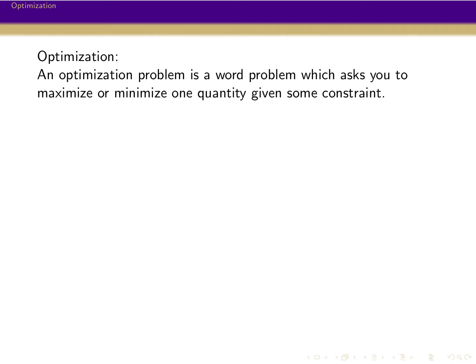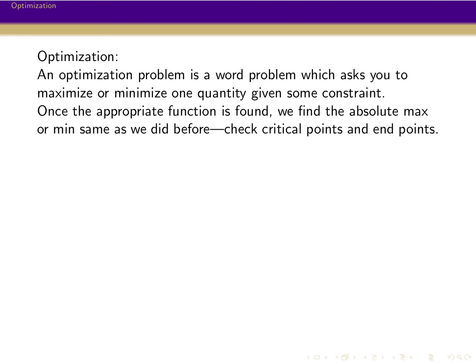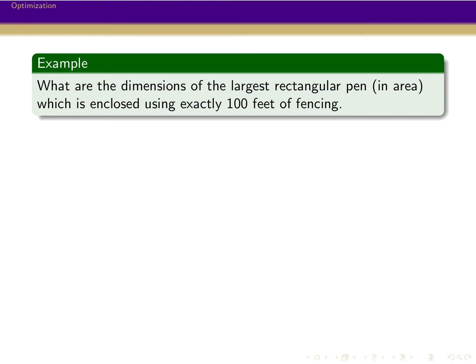Now applying this to word problems — these are called optimization problems. It's a word problem where you're asked to maximize or minimize one quantity given some kind of constraint. Our example is: what are the dimensions of the largest rectangular pen by area which is enclosed using exactly 100 feet of fencing?